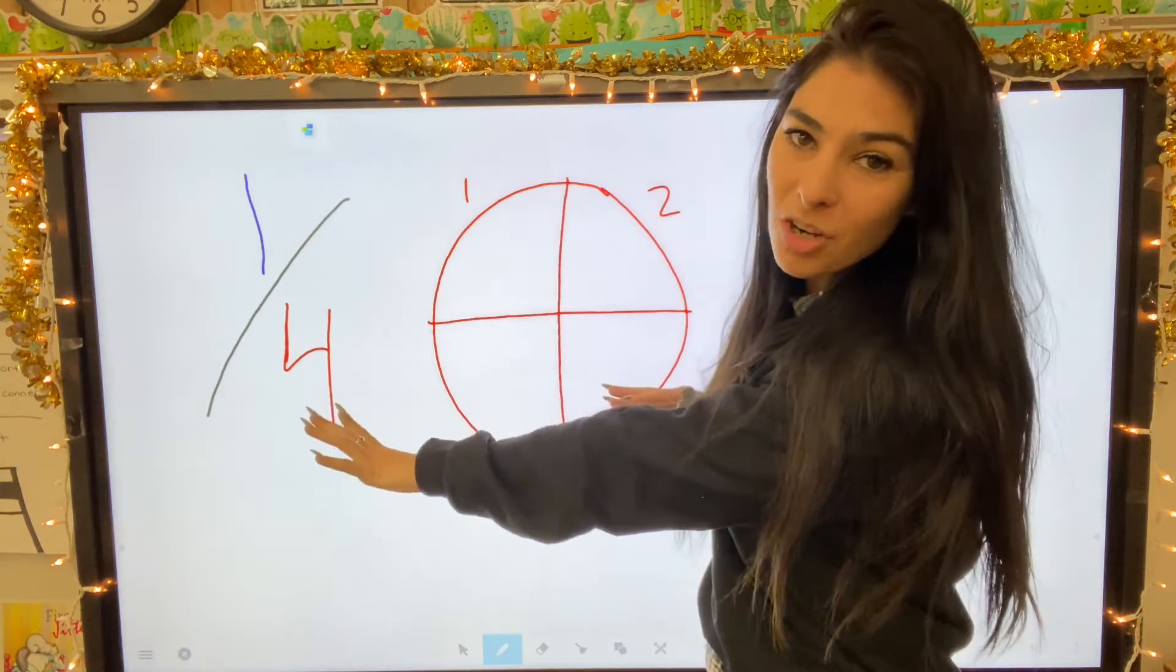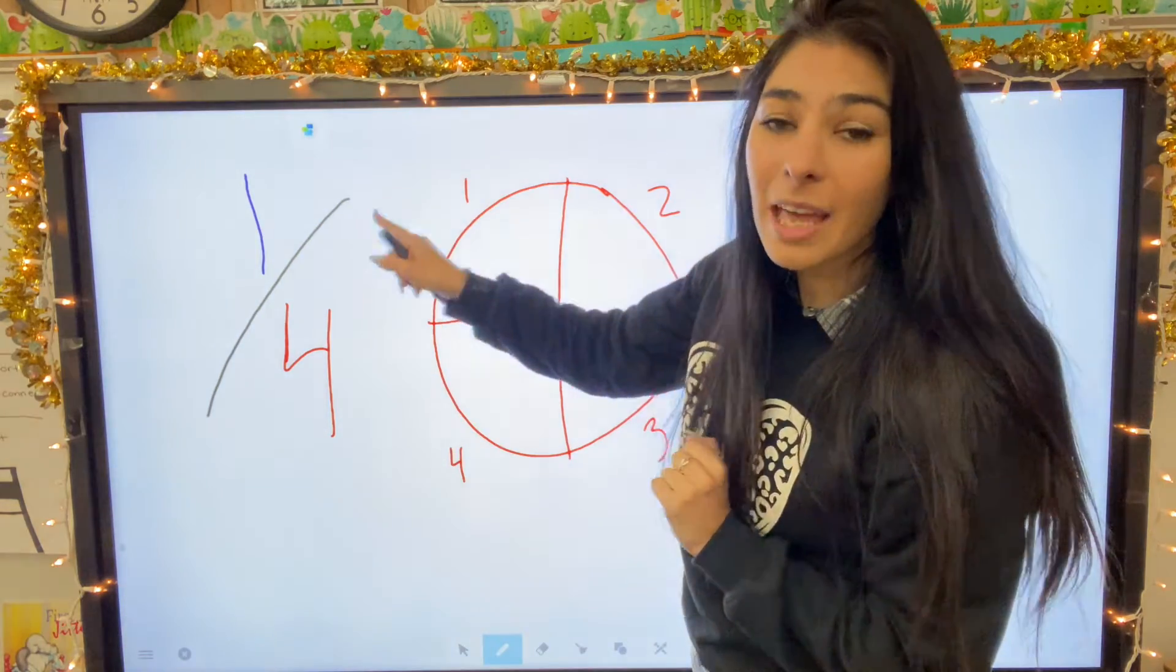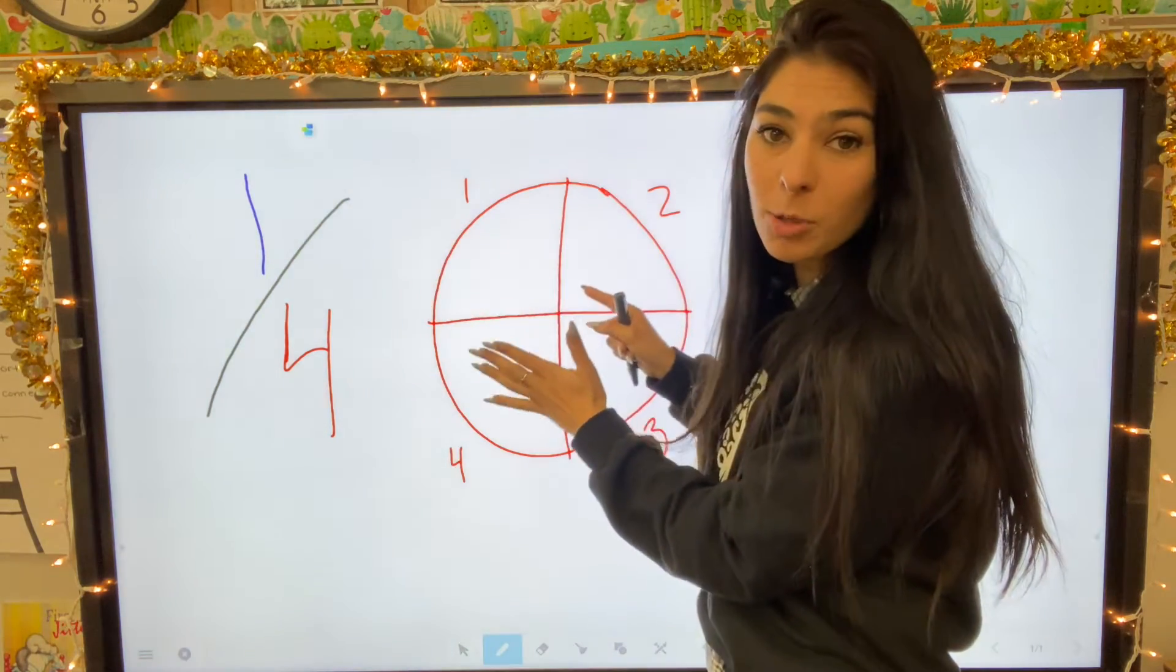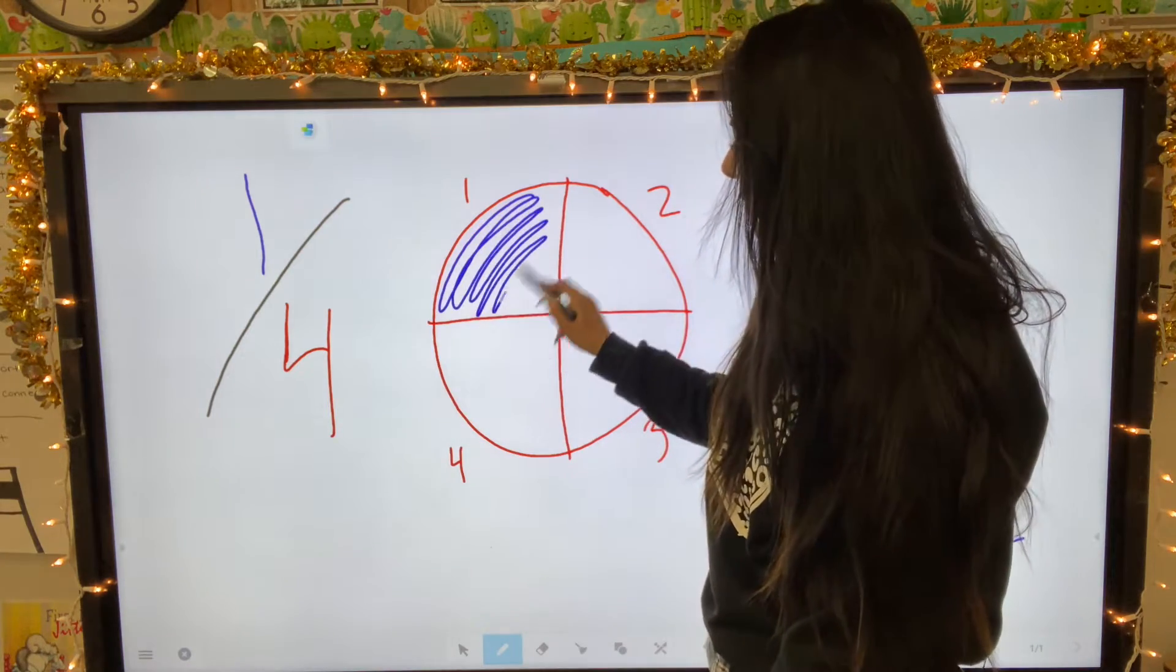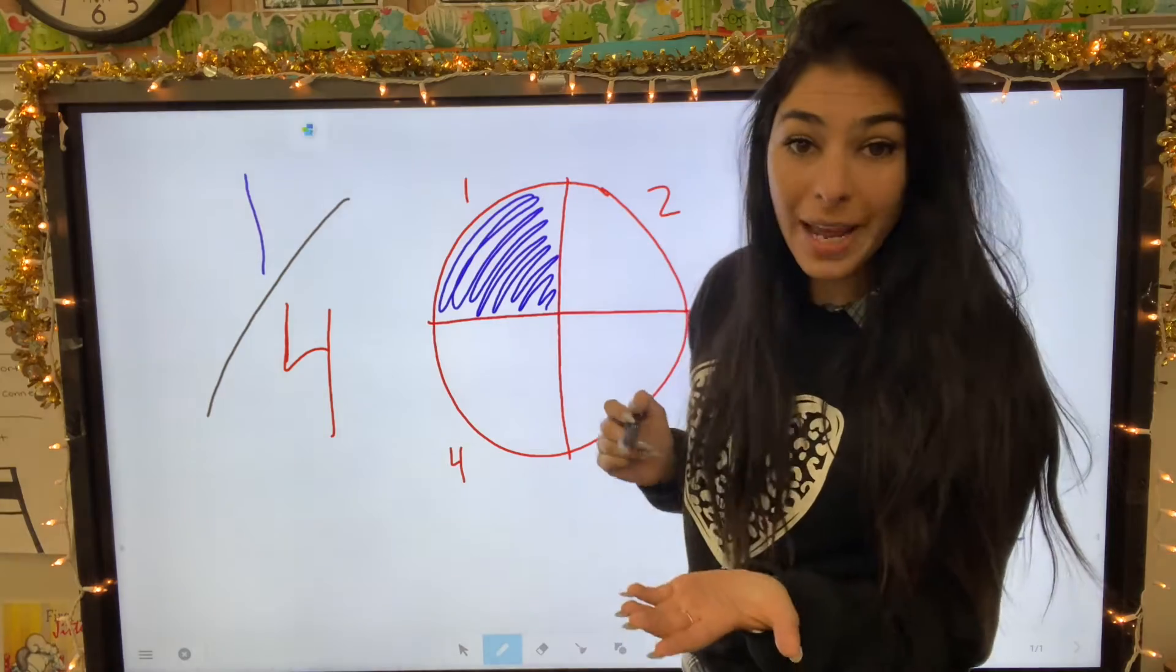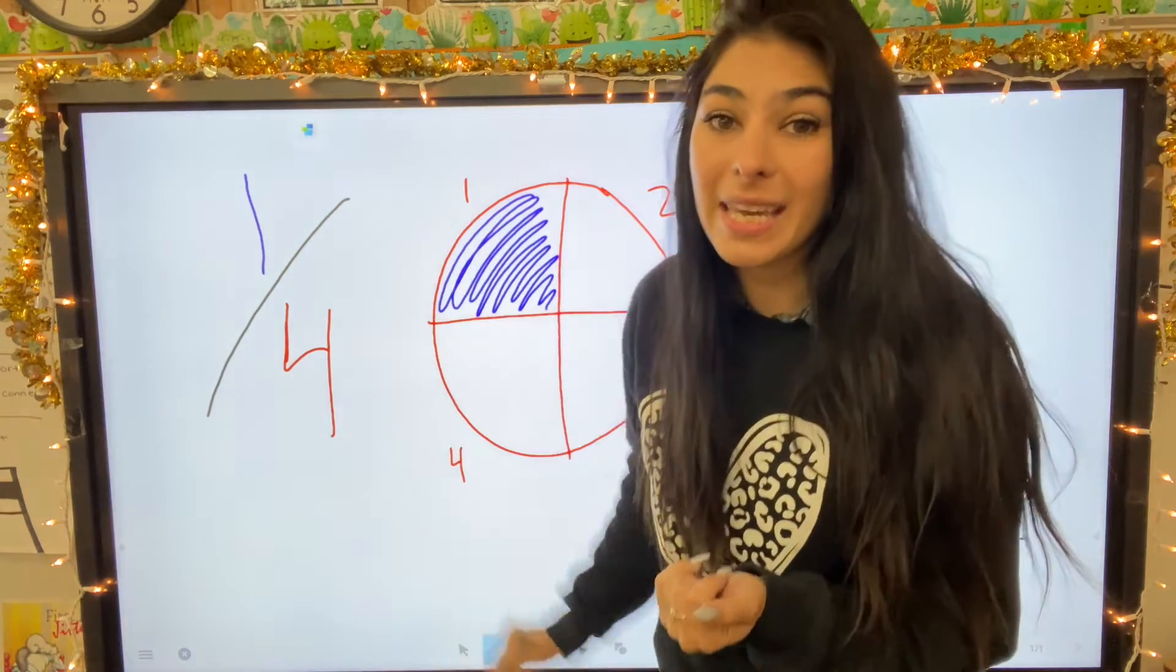So here is my four, which shows the denominator. And now the numerator is one. That means one of these pieces is going to be shaded in. I'm going to eat one big slice of this pizza. So now one fourth is shaded.